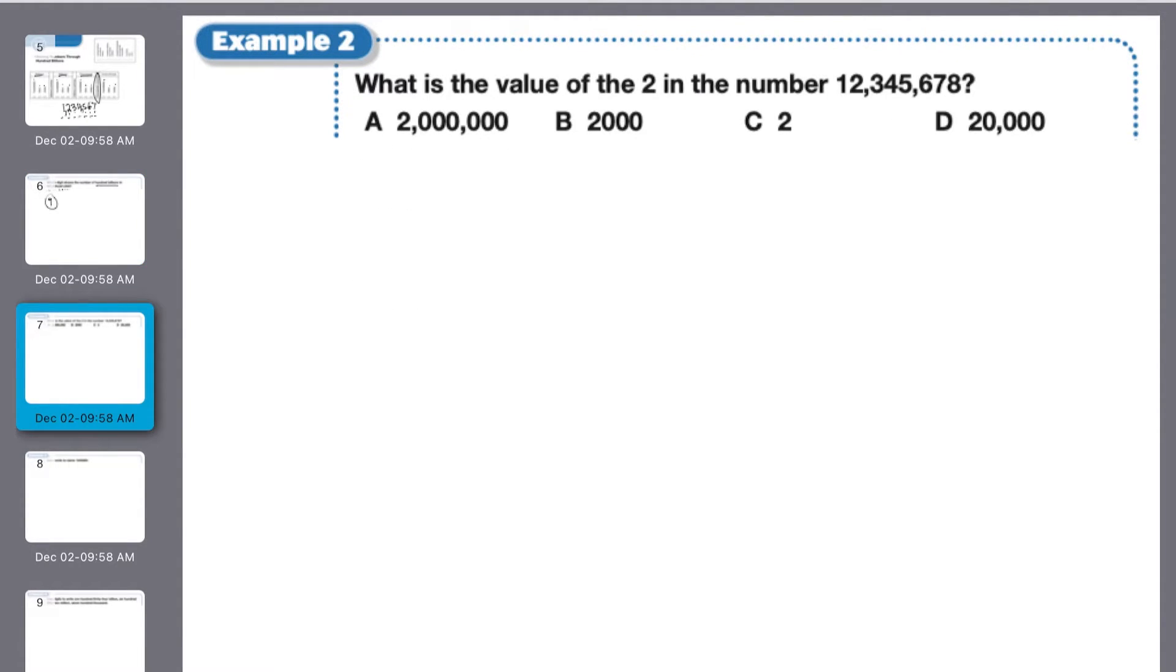What is the value of the two in the number twelve million, three hundred forty-five thousand, six hundred seventy-eight? The two, it's right here. So let's see, it would not be C, it's not two. B, two thousand, nope, the thousands is right here, so it's not that one. D, twenty thousand, that's the twenty thousand, so not that one. So it would have to be A, two million.